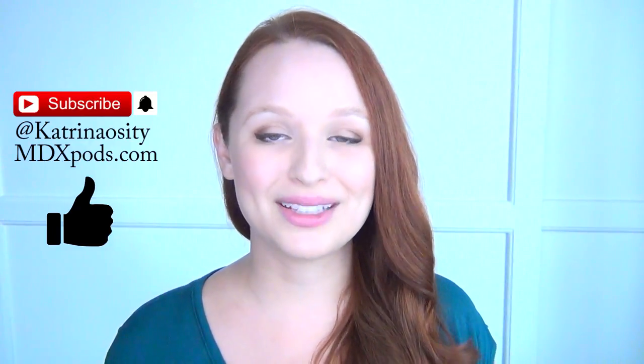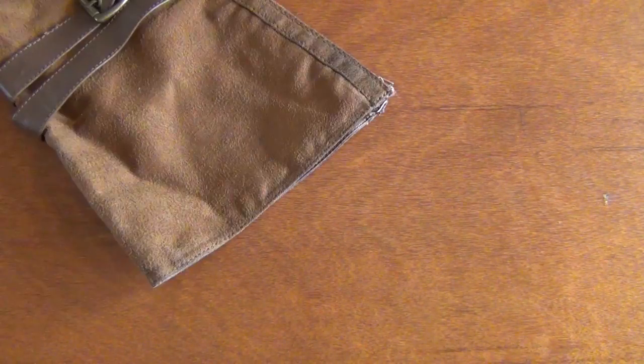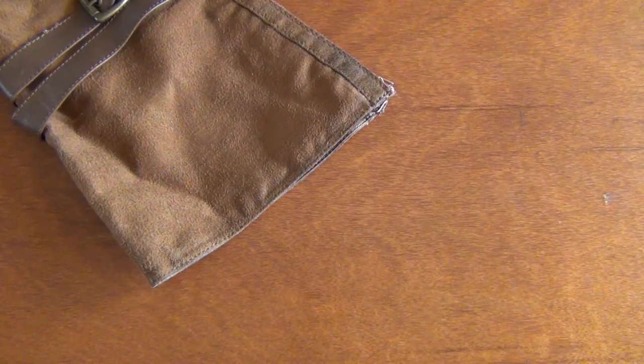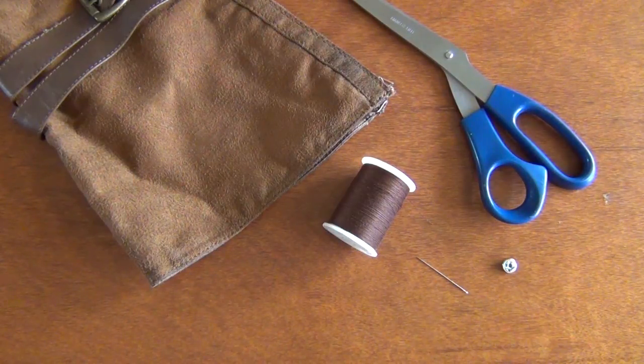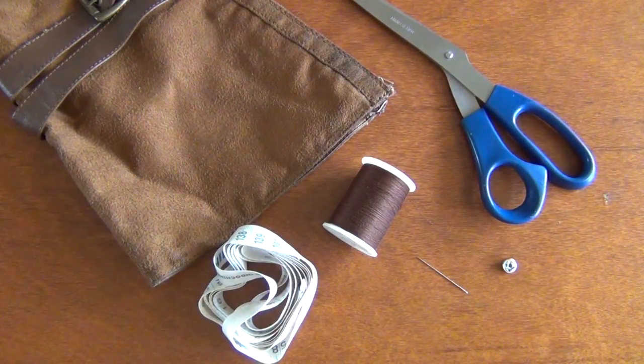For this project, you will need some type of leather and suede. I'm using an old boot, scissors, thread and needle, a clothing snap, and a measuring tape. Start by measuring around your wrist where you want your bracelet to sit, so further up your arm than your wrist bone.